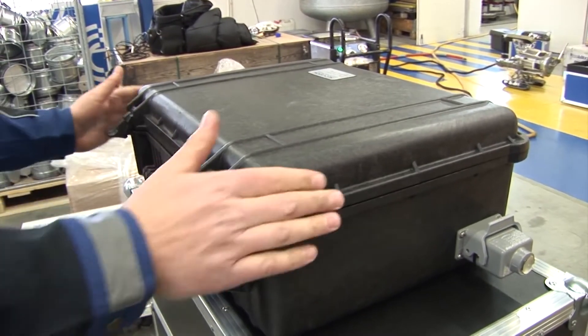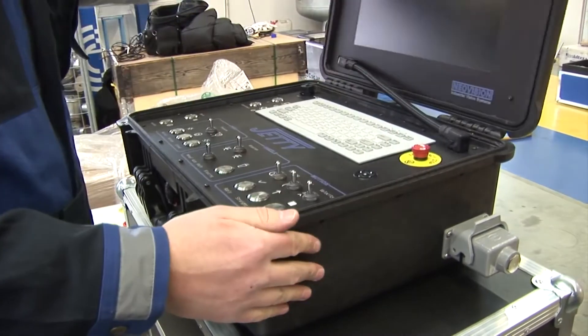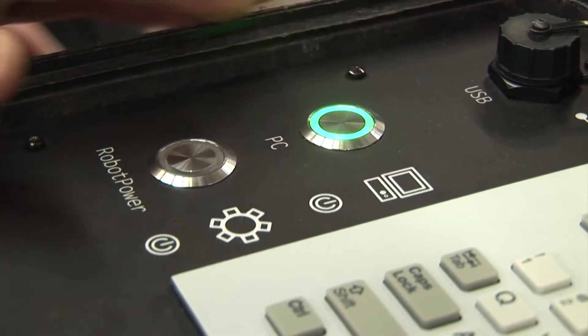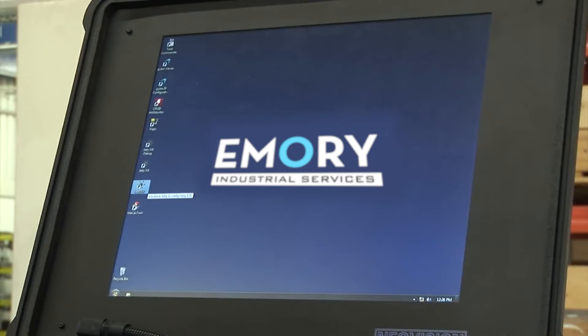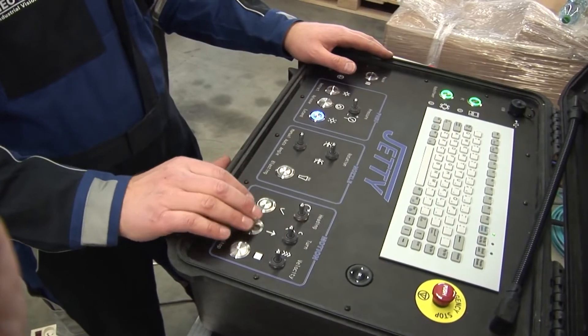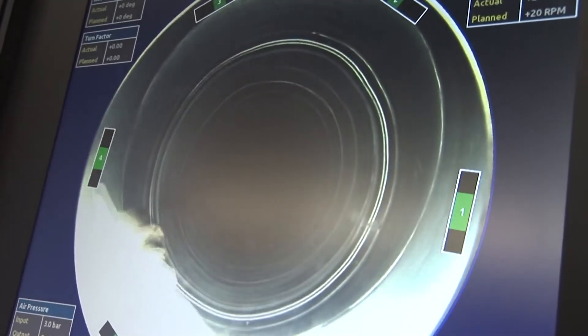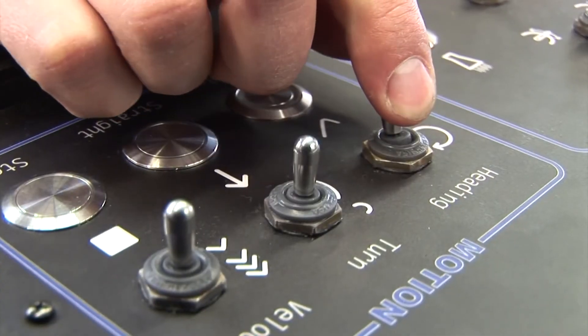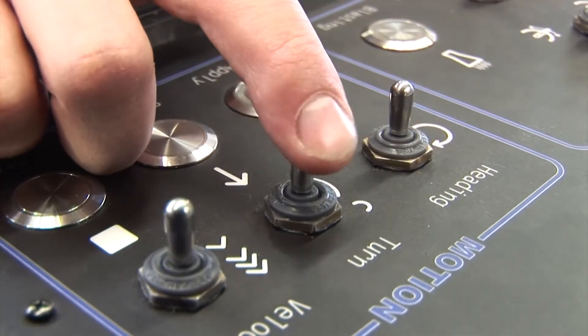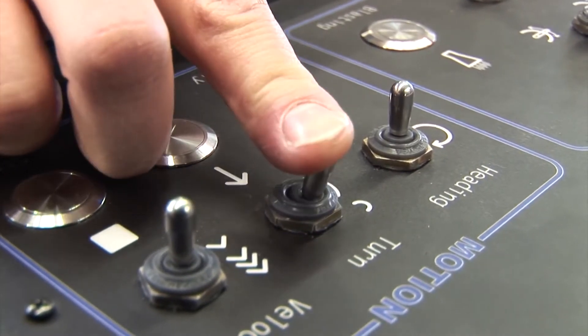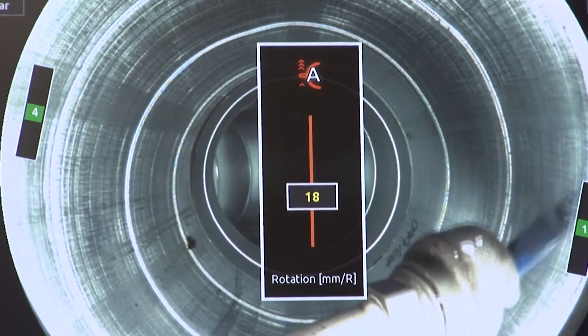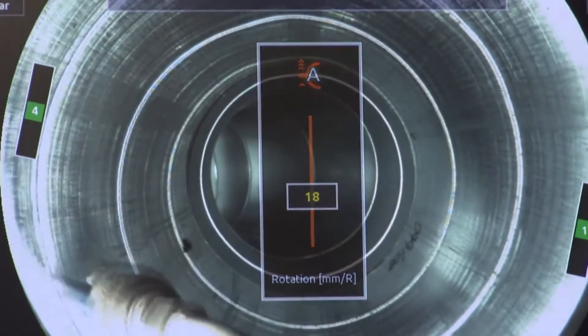The operator controls the robot from a safe location using a control panel. The operator can easily monitor the duct cleaning process and see the results immediately. The control panel enables video recordings to be saved so the results of the cleaning process can be assessed and so customers can see the before and after differences for themselves.